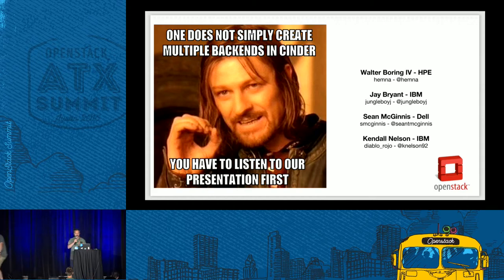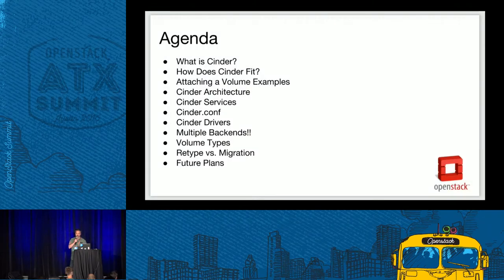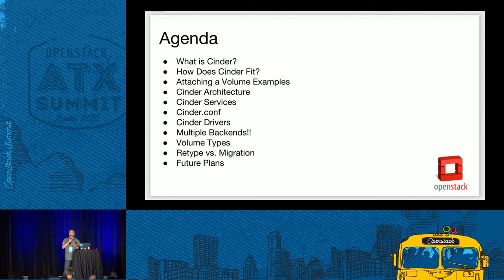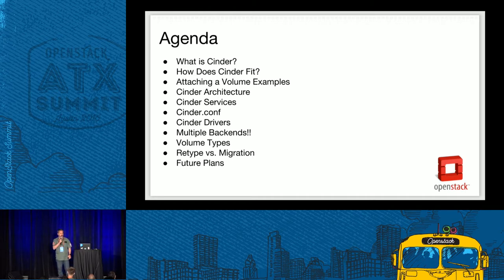This is a beginners session on Cinder and multi-backends. As many of you may know, multi-backend has been supported in Cinder for quite some time now. The agenda: we'll go over what Cinder is and how it fits within the OpenStack ecosystem, examples of how attaching a volume works, an overview of the architecture and services, how to configure cinder.conf for multi-backend, some drivers, advanced features like volume types, differences between retype and migration, and future plans.